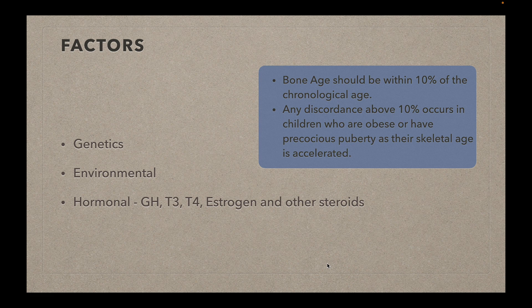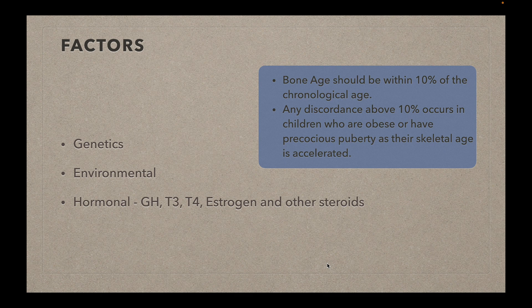The factors which determine bone growth include genetics, environmental factors, and hormonal factors. Important hormones include growth hormone, thyroid hormones, and steroidal hormones, but the most important of all is estrogen. Since estrogen concentration in circulation is three times higher in females compared to males, females tend to reach skeletal maturity earlier by a difference of one to two years compared to males.